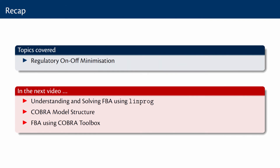In this lecture, we covered another interesting constraint-based modelling technique known as ROOM — Regulatory On-Off Minimization — which tries to minimize the number of flux changes. This has implications for finding the rerouting that happens in metabolic networks on the deletion of a particular reaction. In the next video, we will go back to MATLAB for a lab session covering FBA, the components of the linear programming problem using LINPROG, and the COBRA toolbox for constraint-based reconstruction and analysis.